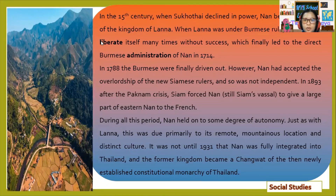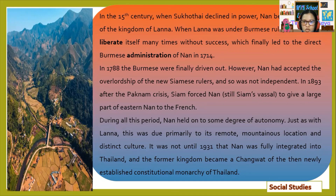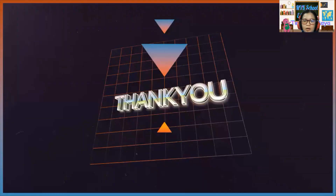In the 15th century, when Sukhothai declined in power, Nan became a vassal of the Kingdom of Lanna. In the year 1788, the Burmese were finally driven out. However, Nan had accepted the overlordship of the new Siamese rulers and so was not independent. In the year 1893, after the Paknam Crisis, Siam forced Nan — still Siam's vassal — to give a large part of eastern Nan to the French. During all this period, Nan held on to some degree of autonomy. Just as with Lanna, this was due primarily to its remote, mountainous location and distinct culture.